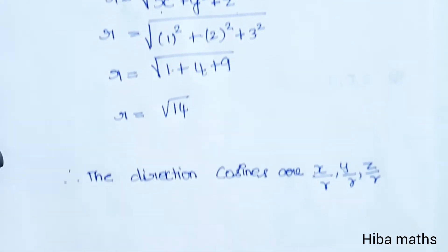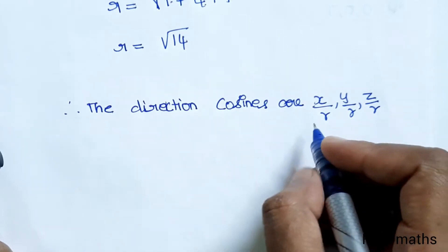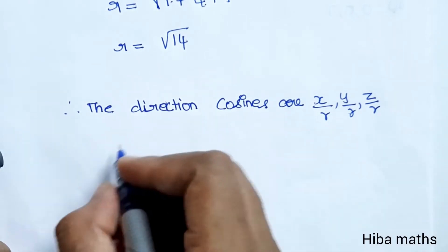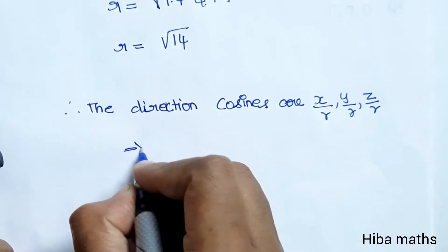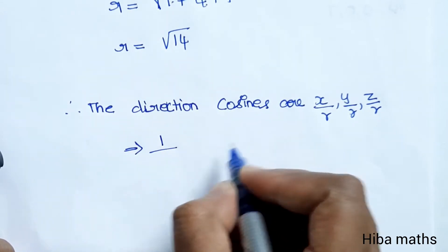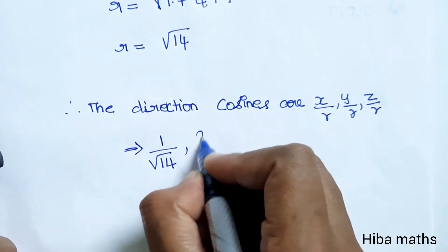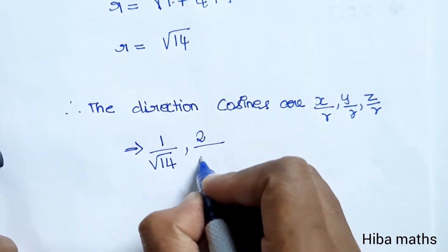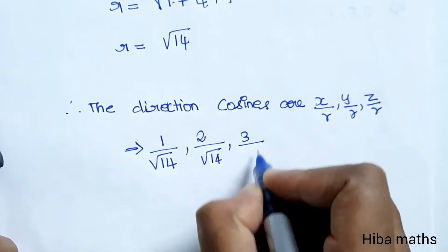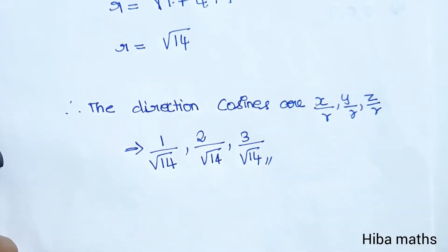Now we have R. The direction cosines are given by X by R, Y by R, Z by R. So X is 1, R is root 14; Y is 2, R is root 14; Z is 3, R is root 14. That is our answer: 1/√14, 2/√14, 3/√14.